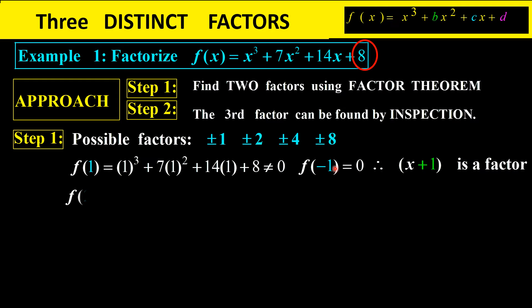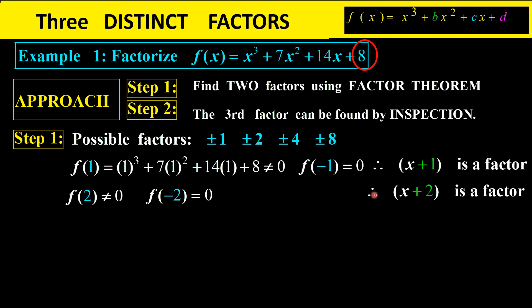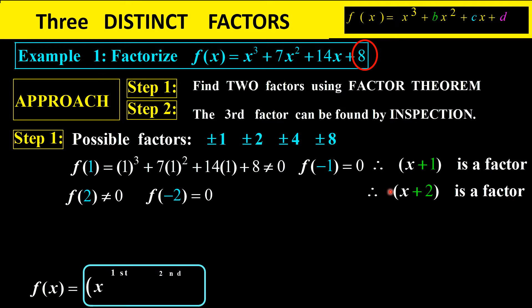Now we have one factor, x plus 1. We need another one. Trying f(positive 2) doesn't give 0. Substituting f(negative 2) does give 0, so x plus 2 is our second factor. We've now found two factors: x plus 1 and x plus 2.